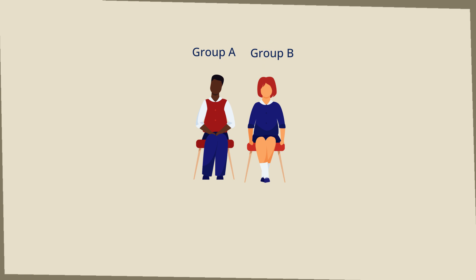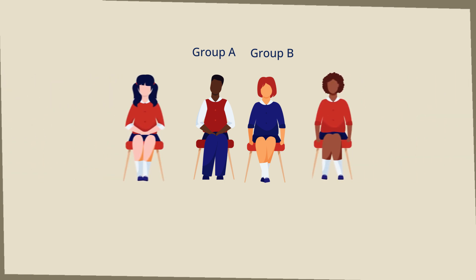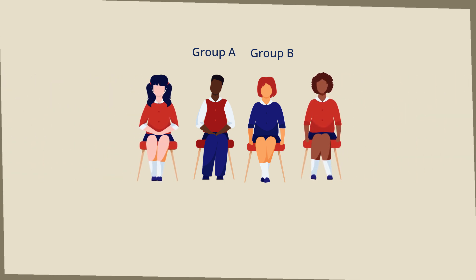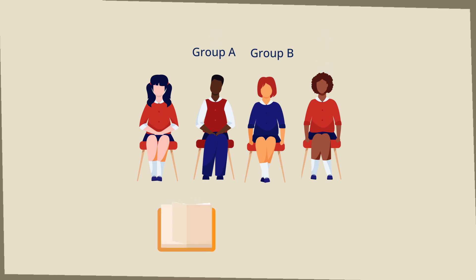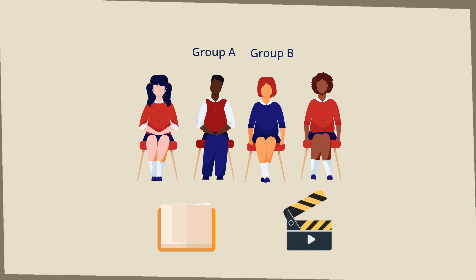After this exchange, groups of four students are formed — with only A students and only B students in each group. The students exchange the information they got from the other students and combine it with the text they've read (Group A) or the video they've seen (Group B). Each group then creates a video (Group A) or a text (Group B) that summarizes the subject.